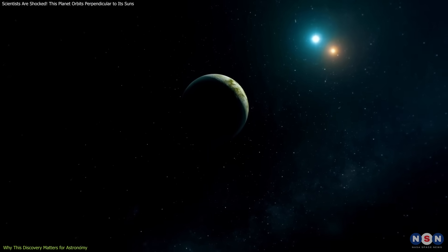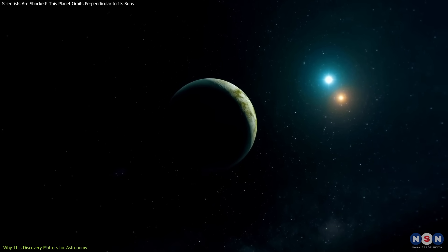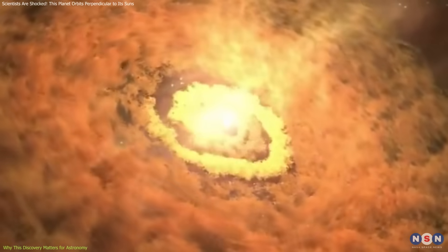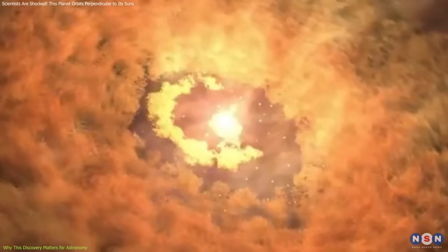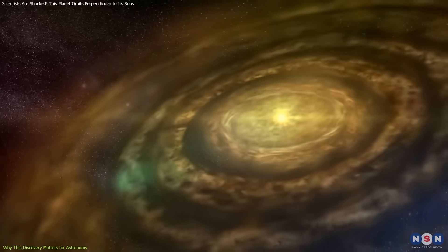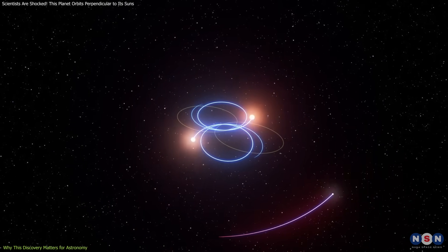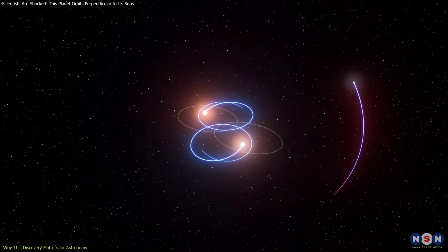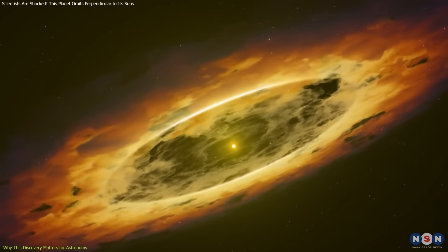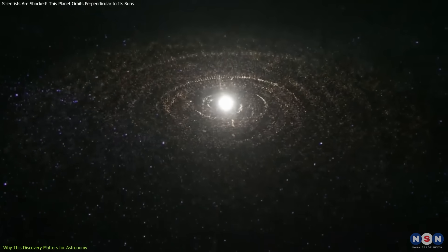This planet forces astronomers to rethink some of the most fundamental assumptions about how planets form, survive, and evolve. One immediate impact is on models of planetary system formation. Traditionally, it's believed that planets form within a relatively flat disk of gas and dust that coalesces around a new star or star system. This disk naturally aligns with the spin of the stars. But if a planet like this one can form or migrate into a perpendicular orbit, it suggests that either planet formation can happen under more chaotic conditions than previously thought, or that early system dynamics can be far more violent and disruptive than our current simulations predict.